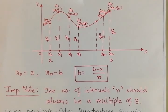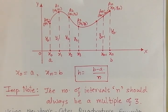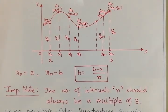The most important condition in Simpson's 3/8 rule is that the number of intervals n must always be a multiple of 3. For example, if the number of intervals is 5 or 8, we cannot apply Simpson's 3/8 rule because 5 and 8 are not multiples of 3. The minimum applicable number of intervals is 6, and valid values are 6, 9, 12, 15, 18, and so on.